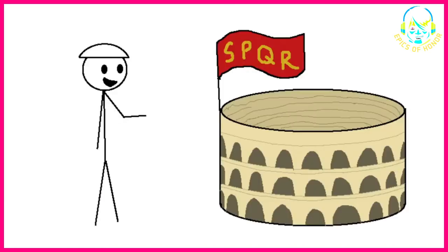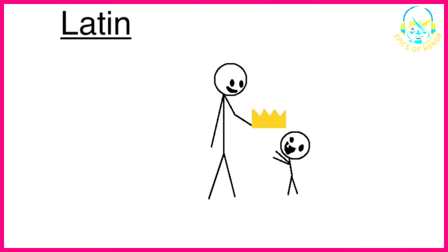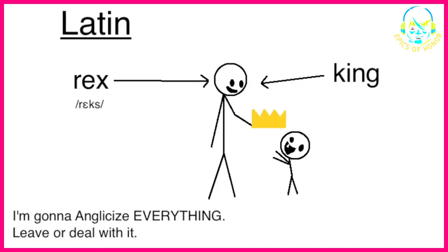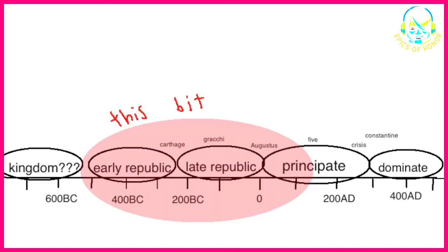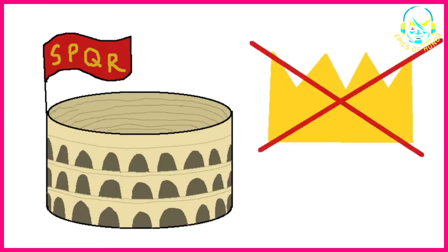Like a lot of history stories, this one starts with the Romans. Latin, like most languages, had a word for rulers that held all of the power and passed it down to their kids. We call them kings; their word was rex. But for the first huge chunk of their history, the Romans defined themselves largely by the fact that they didn't have one.